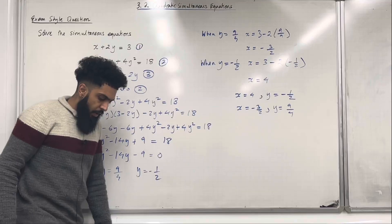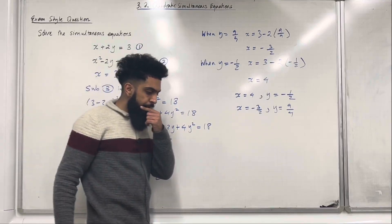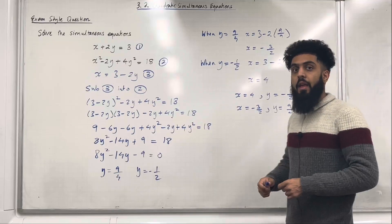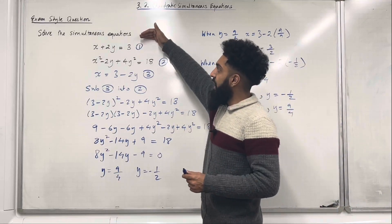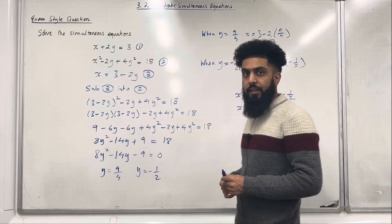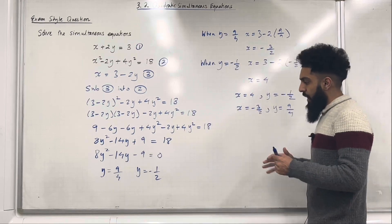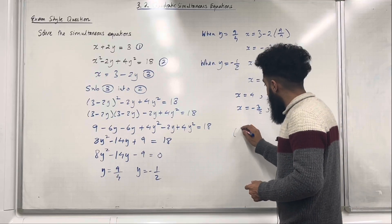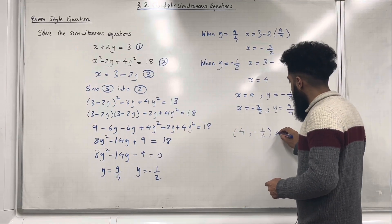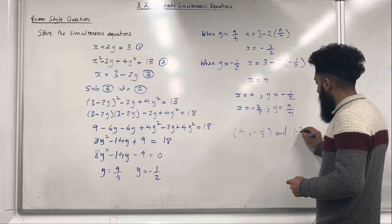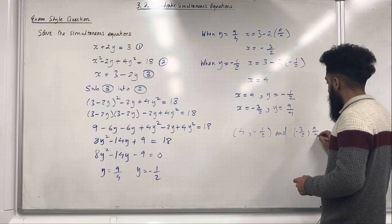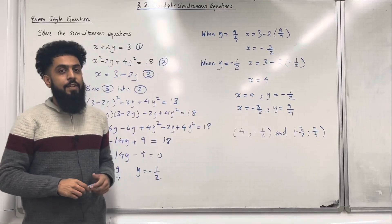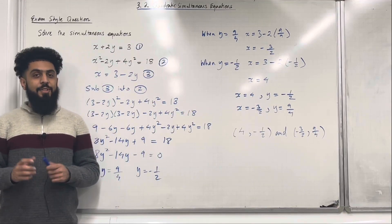Graphically, these solutions represent the points of intersection between the line and the curve. Written in coordinate form, the points of intersection are (4, minus 1/2) and (minus 3/2, 9/4). And that completes this teaching video — if you found it useful please don't forget to subscribe.